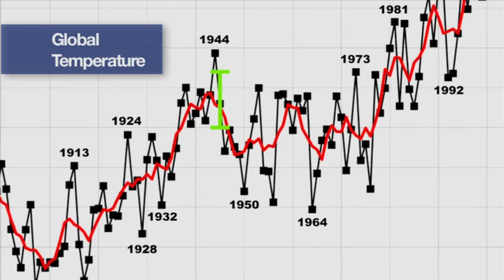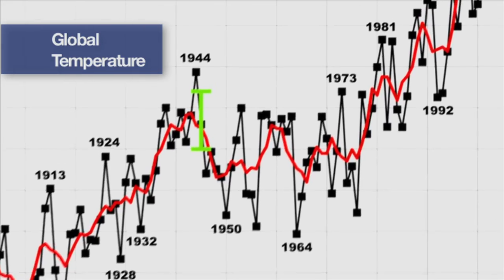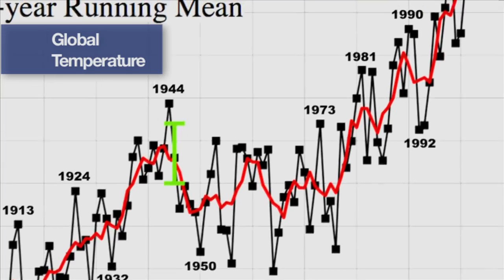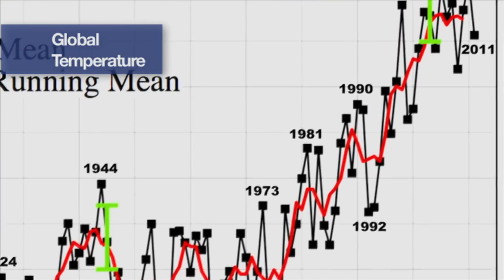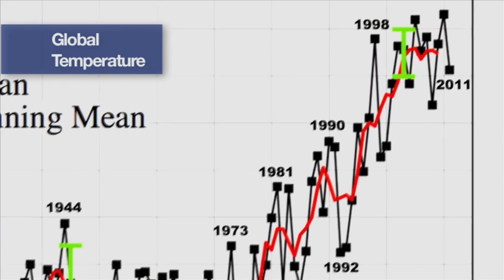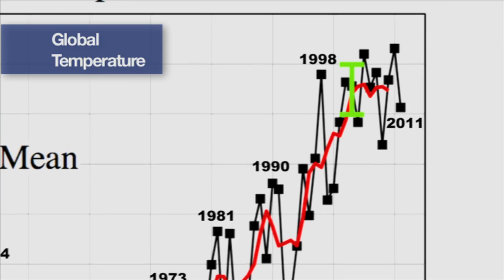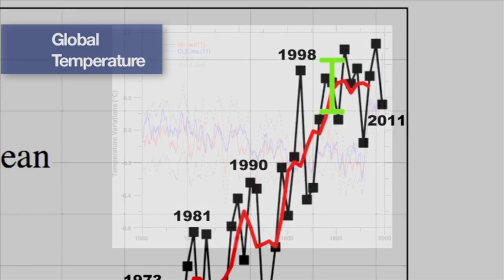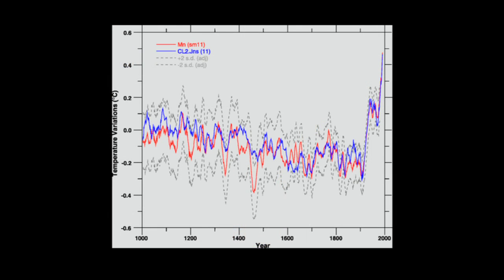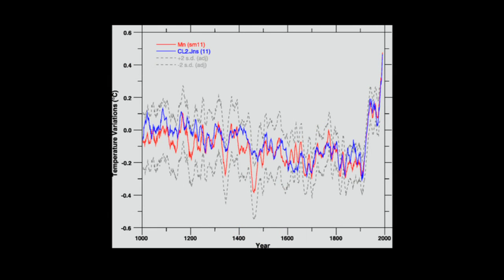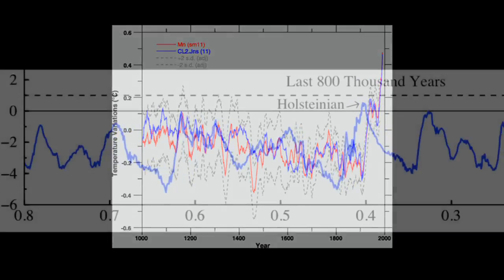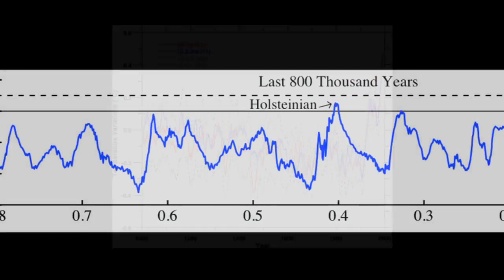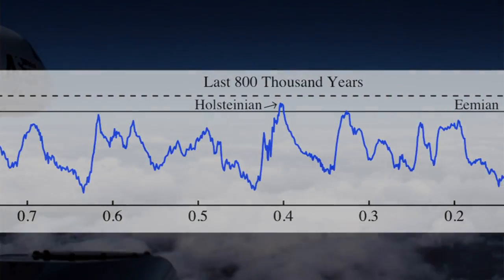Climate change refers to changes in these statistics over seasons and year-to-year changes as well as decades, over centuries, and even over thousands of years — as with how Earth moves in and out of ice ages and warm periods.